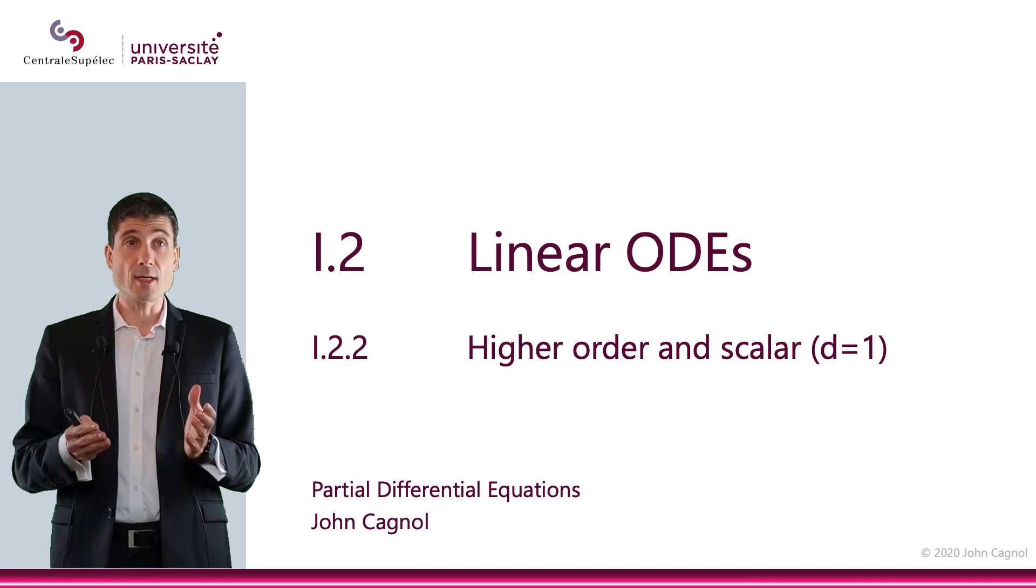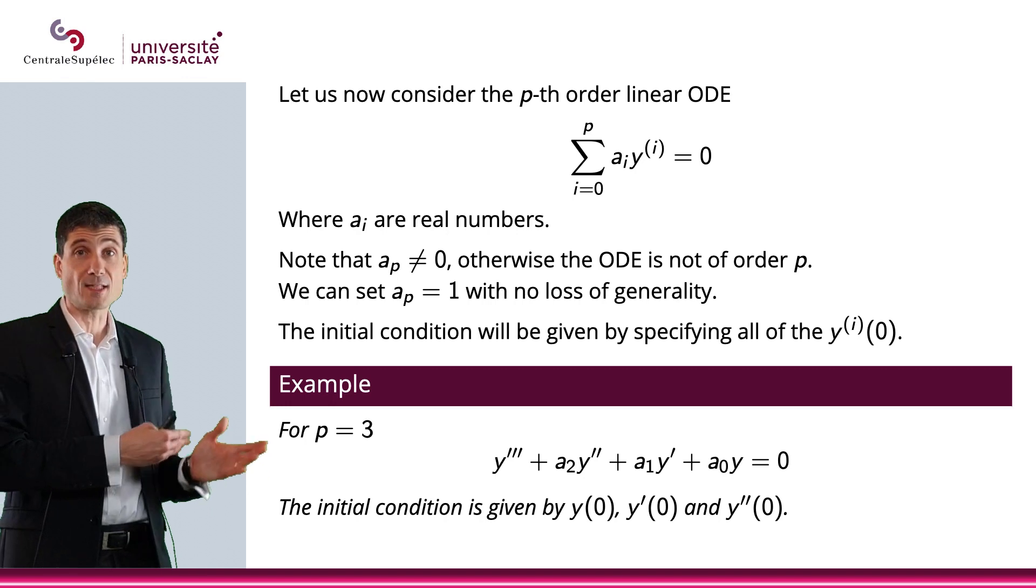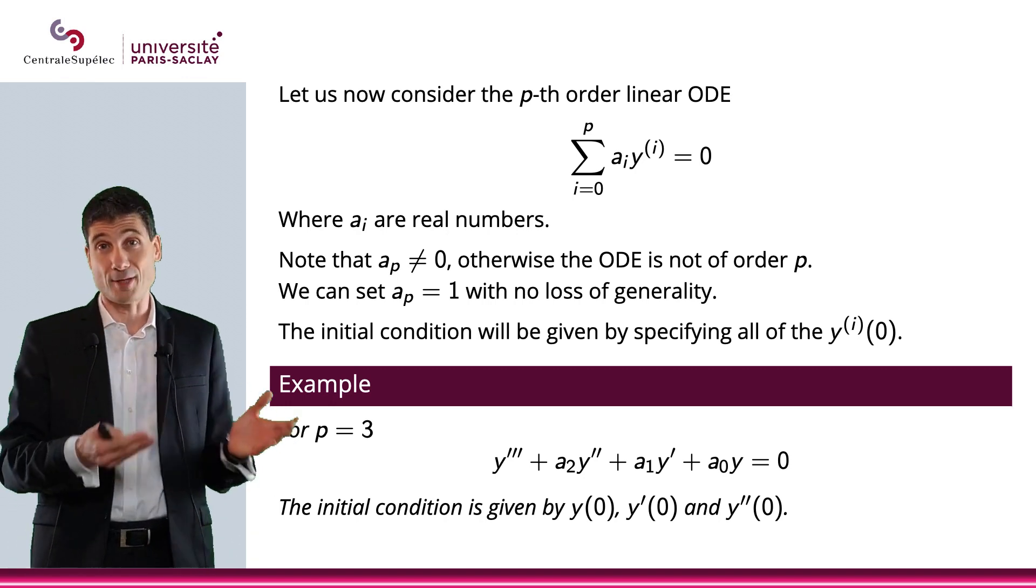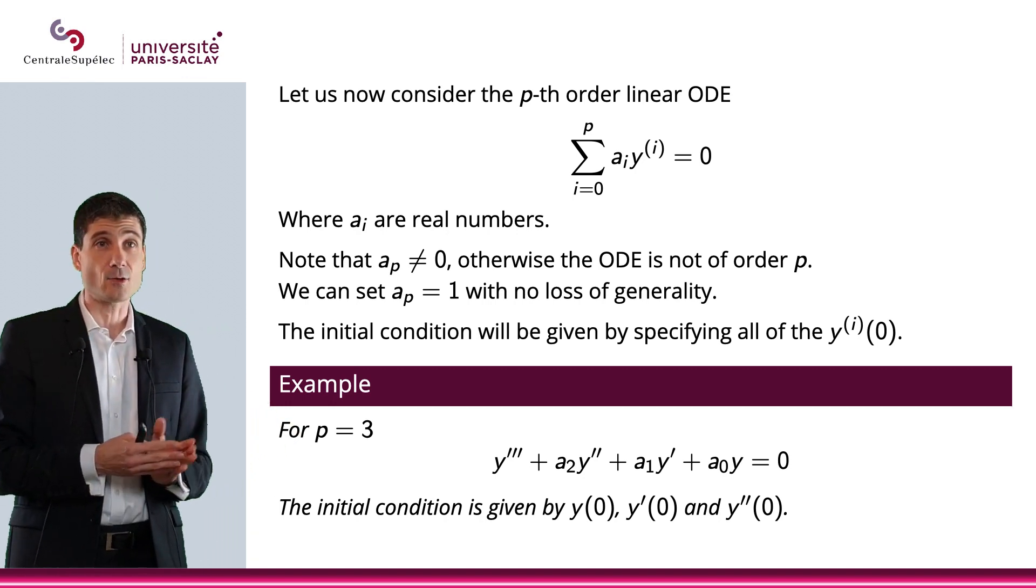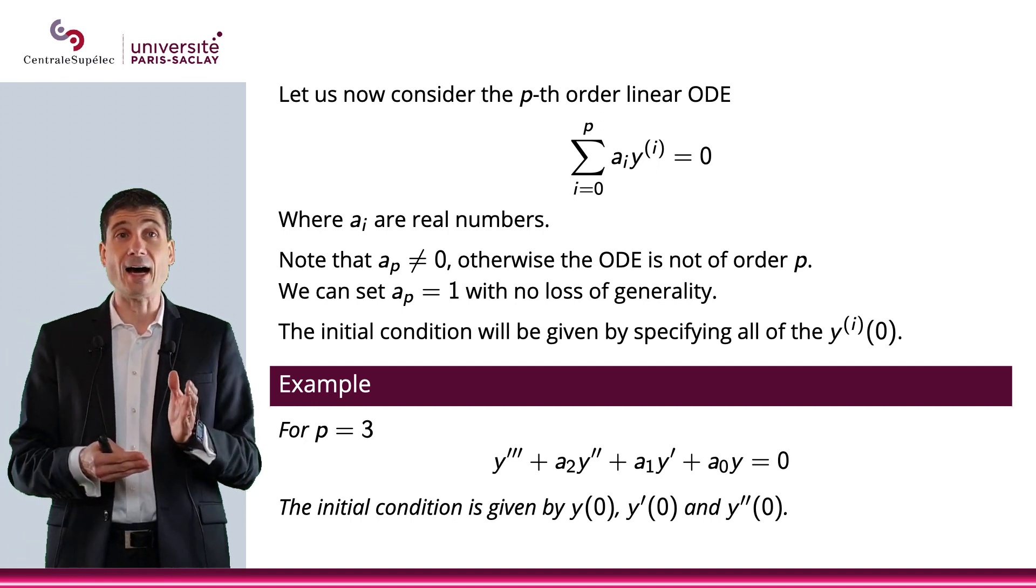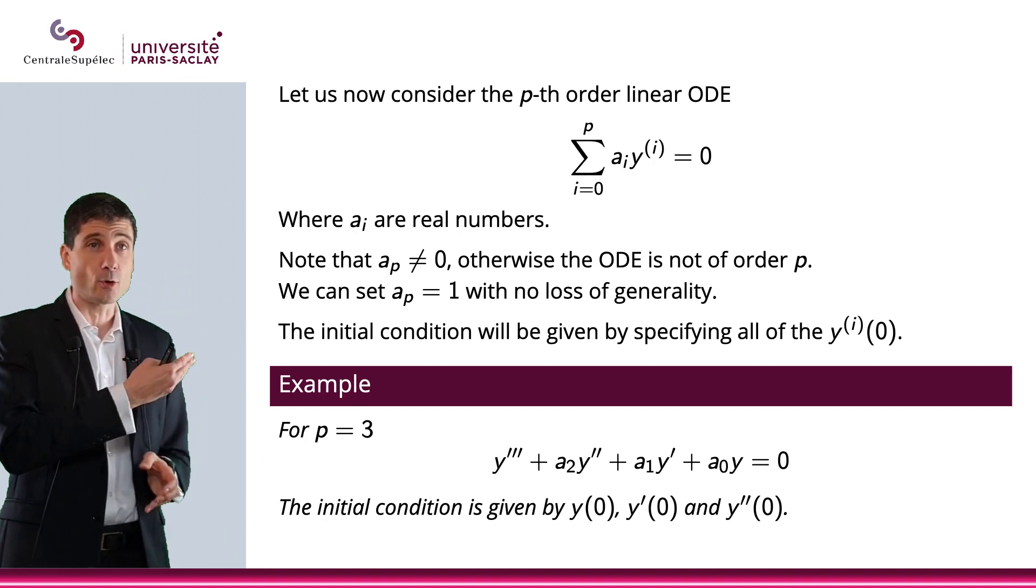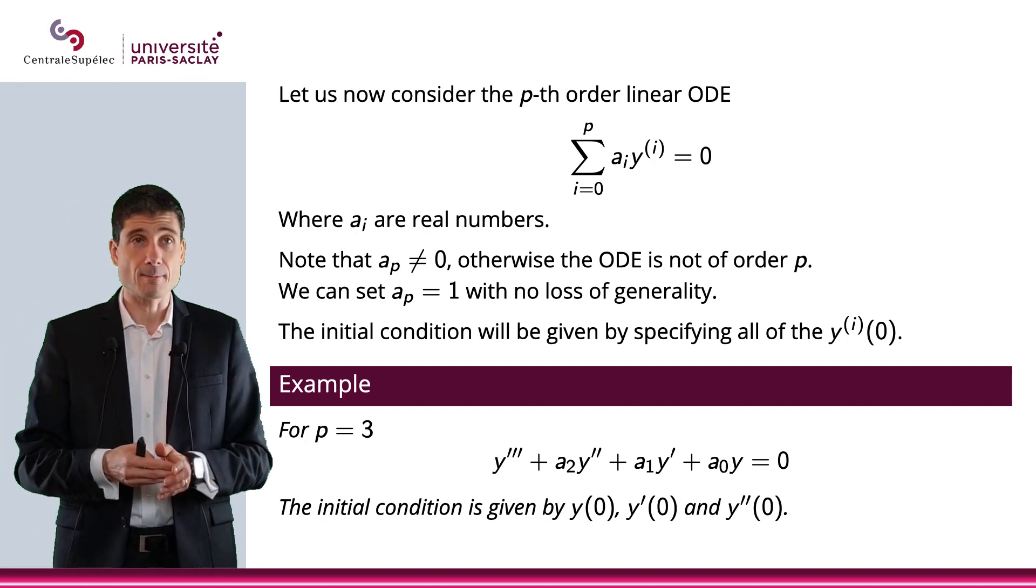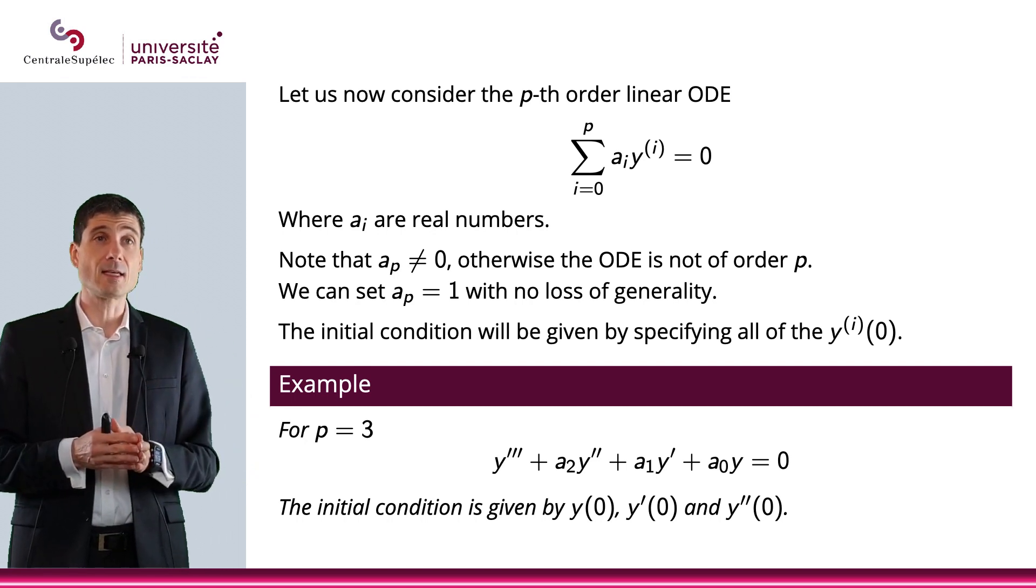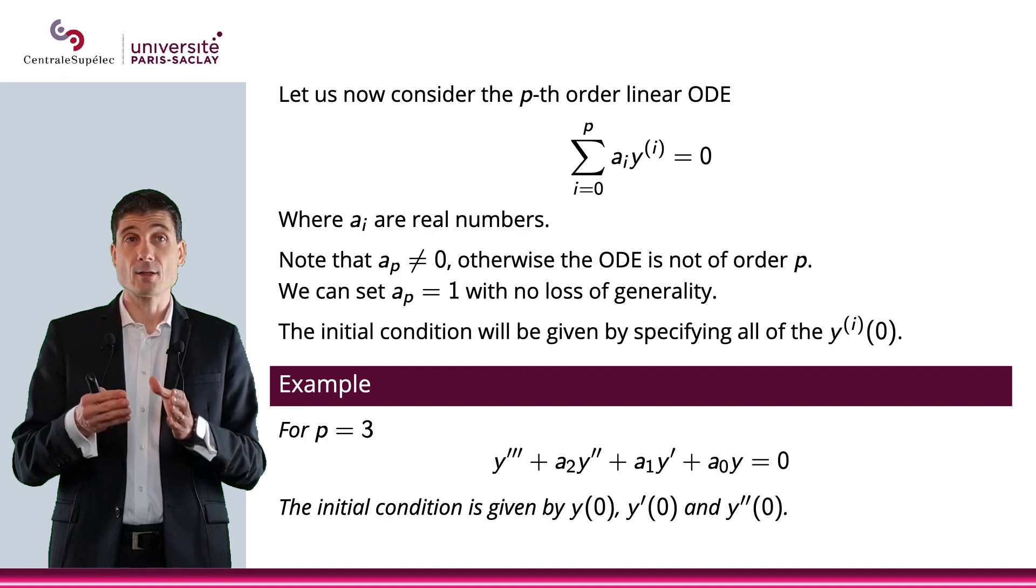Now what we're going to do is consider that ODE, which is basically an ODE of order p. That is the sum for i equals 0 to p of a_i and y to the i-th derivative, which I will denote with this i in parenthesis. So that is the p-th order linear ODE that I will consider.